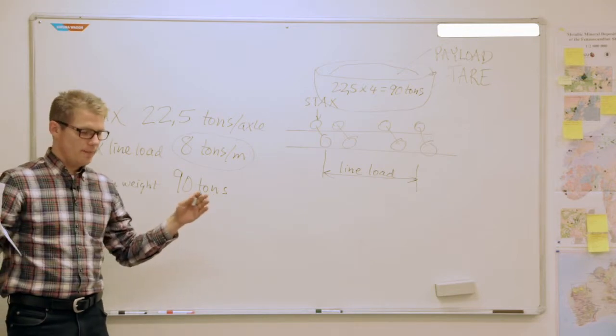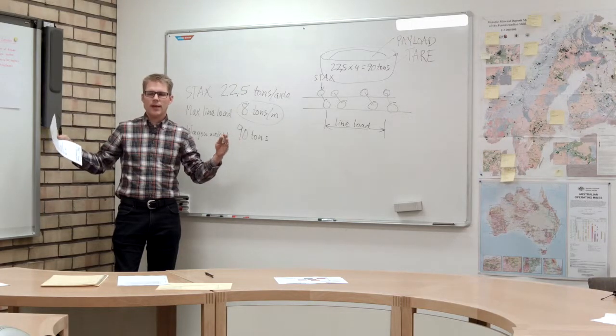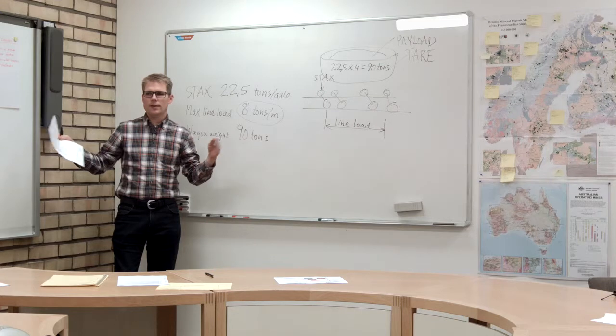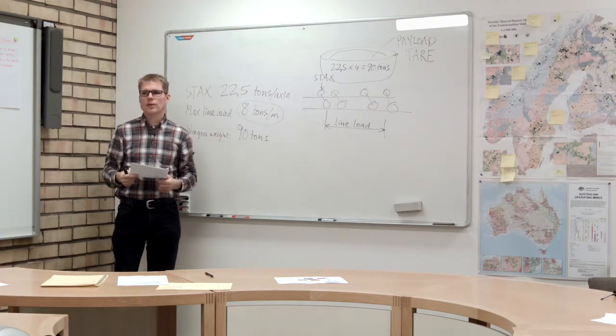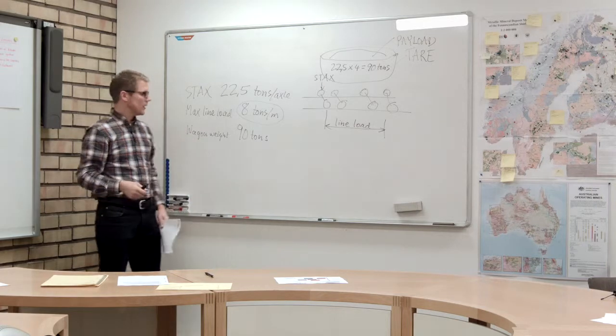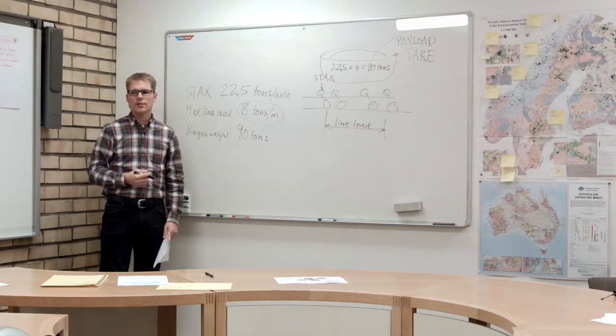If you have a limitation on the total wagon length and you want to have as many wagons as possible in the train, then it's very interesting to keep the wagon length as short as possible. Let's calculate the shortest possible wagon allowed on this track.